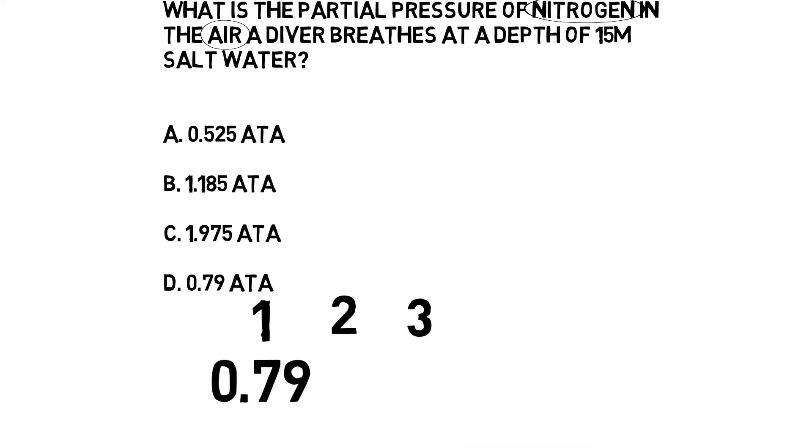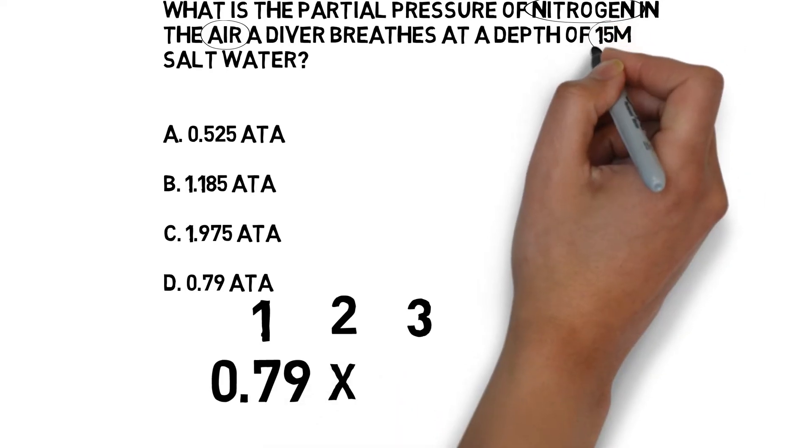0.79. Step 2 is to multiply. With partial pressure questions, you always multiply. The partial pressure of the gas is determined by the percentage of the gas in the total gases and then the pressure that gas is under, which is why you always multiply.